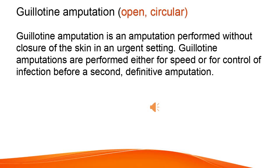Guillotine amputation — open, circular — is an amputation performed without closure of the skin in an urgent setting. Guillotine amputations are performed either for speed or for control of infection before a second, definitive amputation.